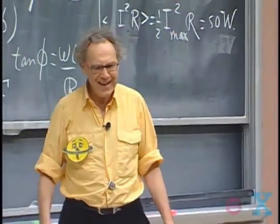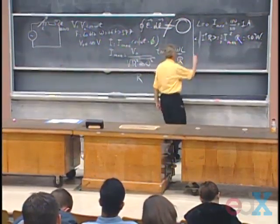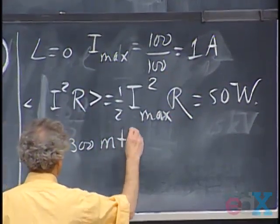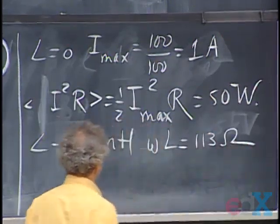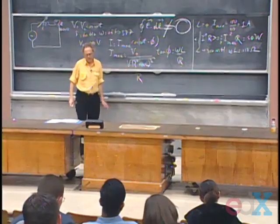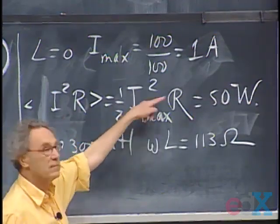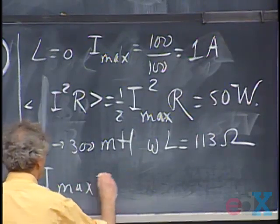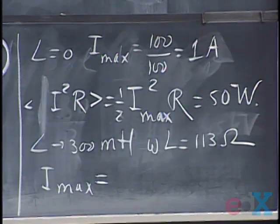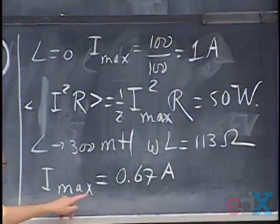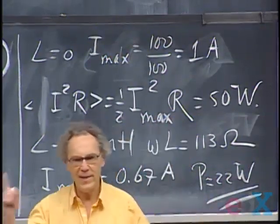He calls this a light dimmer. Now he increases L to 300 millihenries. At 300 mH, ωL = 377 × 0.3 ≈ 113 ohms. I_max = 100 / √(100² + 113²) ≈ 0.667 amperes. The time-averaged power is ½ × (0.667)² × 100 ≈ 22 watts. So that's what a light dimmer does — you turn up the self-inductance and the light is dimmer.